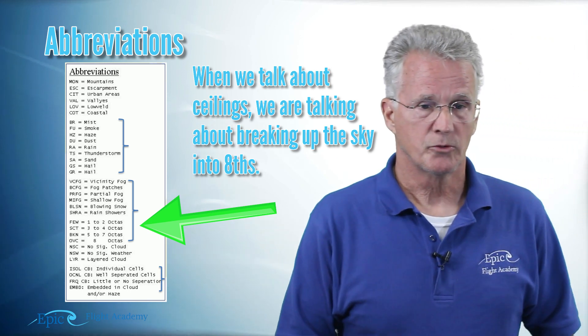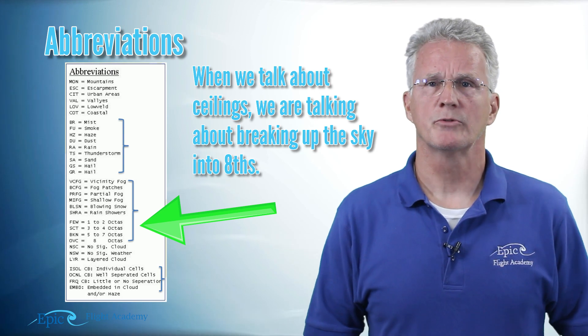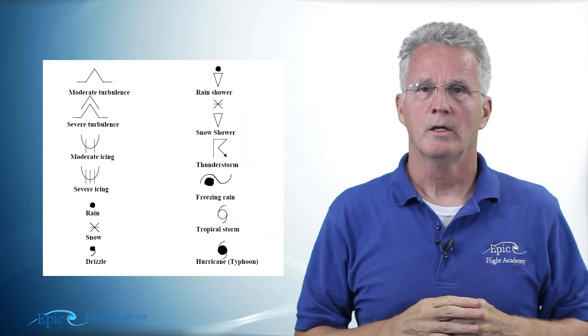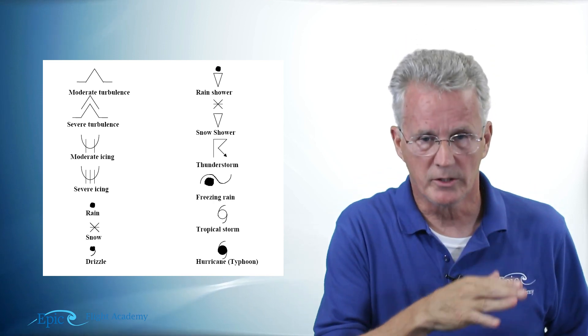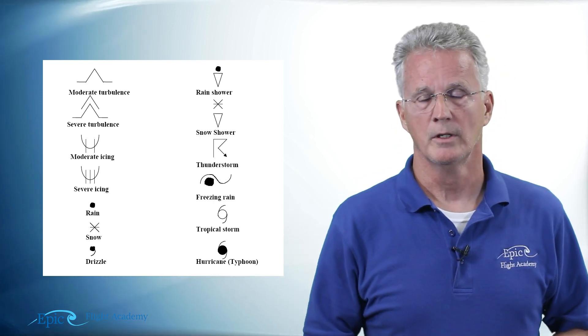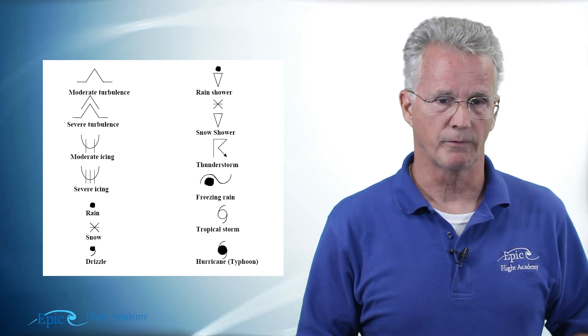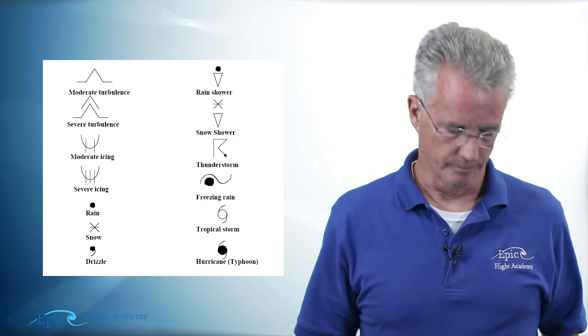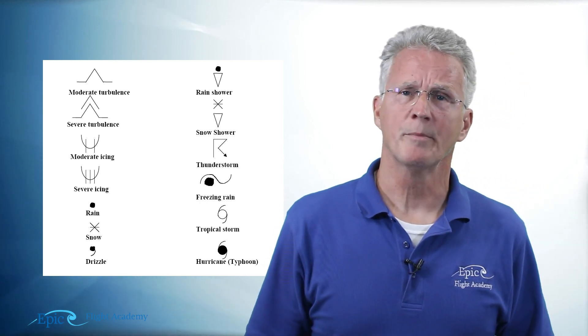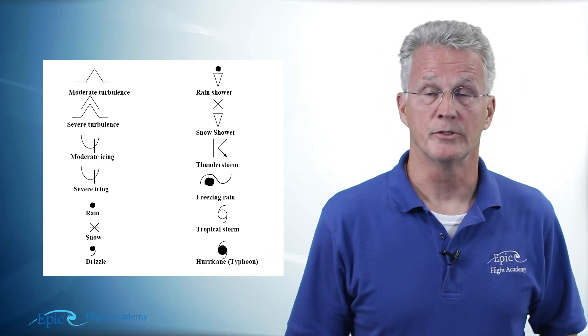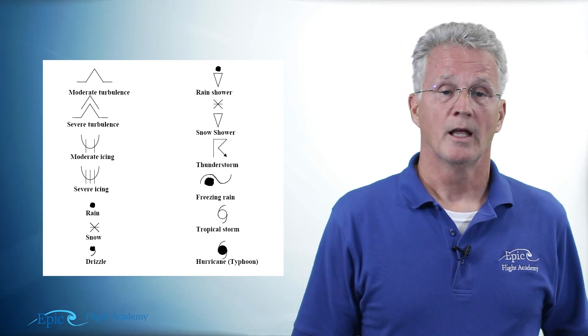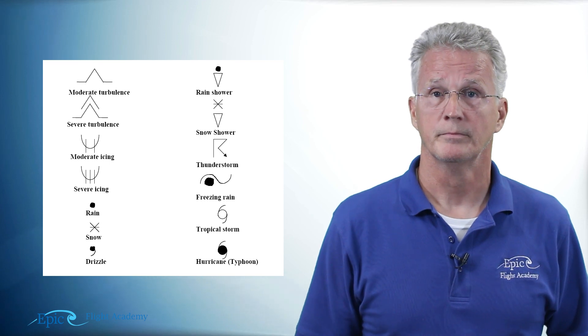The final example that we want to show you concerning legends is one that shows these peaks. Notice these peaks talk about turbulence, these cups talk about icing and then you see other symbols on there for rain, rain showers has the triangle below it and so on. So common sources for these legends again: your textbook, aviationweather.gov and the AIM.